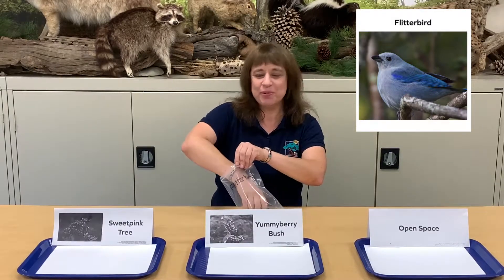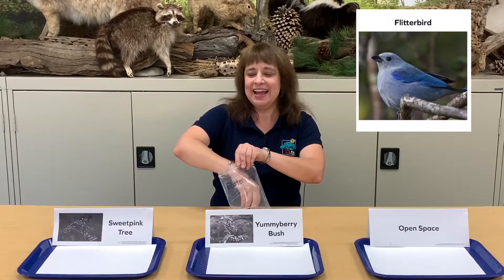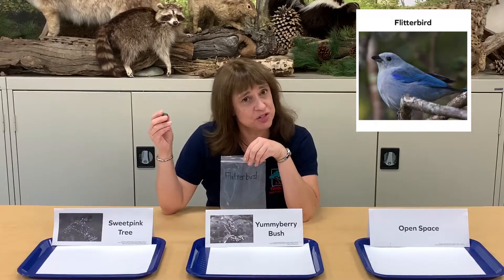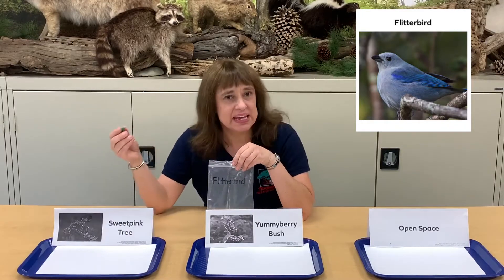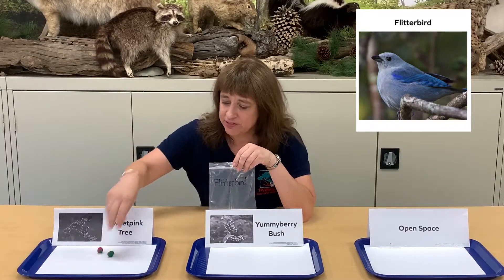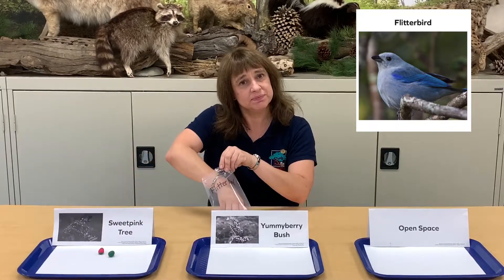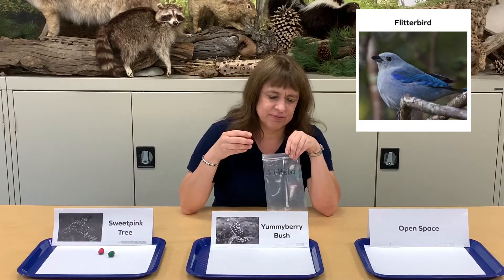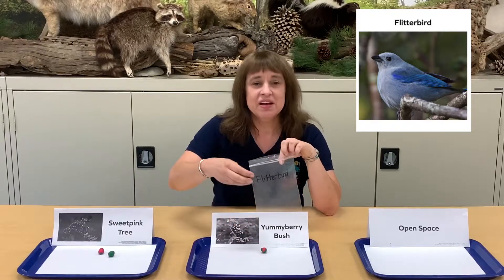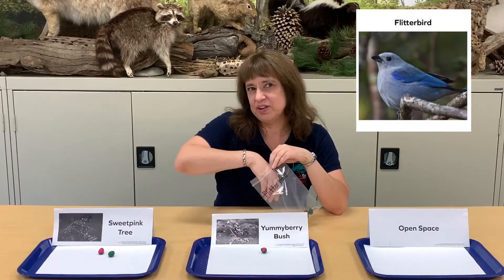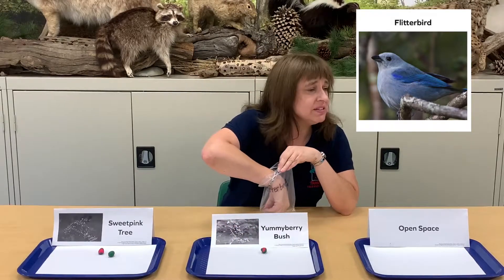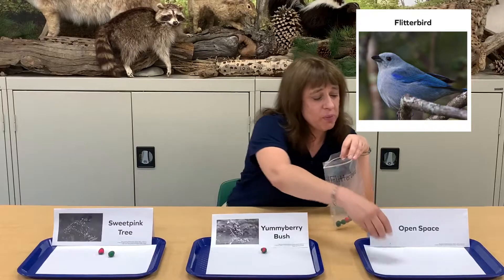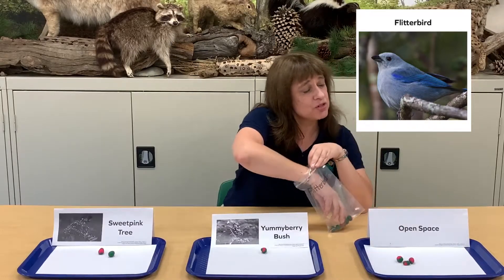Here we are the flitter bird and we come to the sweet pink tree and we eat, and maybe we'll leave a couple droppings. Then we come to the yummy berry bush, but we don't hang around there too long because we don't like those berries, so we're just not going to leave that many droppings there. And in open space, we'll fly around and leave some more droppings too.